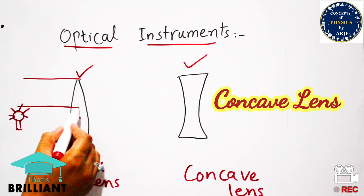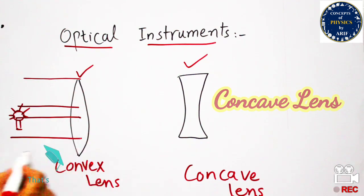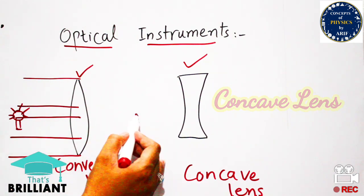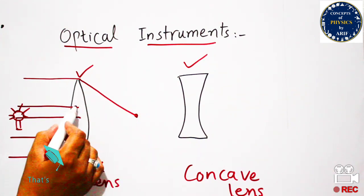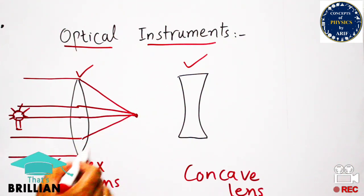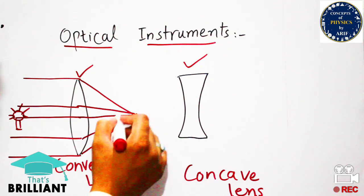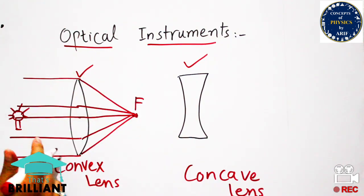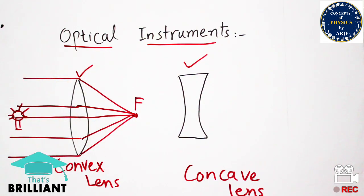All the waves are traveling in one direction and interacting with the lens in a straight line. After interacting, it converges to one point. This is a property of the convex lens — all the waves coming from any direction will converge to, or focus at, one point.